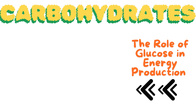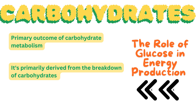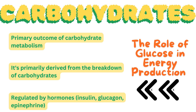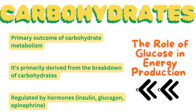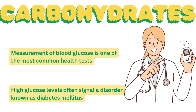Glucose is one of the most critical outcomes of carbohydrate metabolism, primarily derived from the breakdown of carbohydrates we consume or from our body's stores. Under diverse conditions, hormones like insulin, glucagon, and epinephrine regulate blood glucose levels, keeping them within a narrow, healthy range. High glucose levels often signal diabetes mellitus, a condition impacting over 415 million adults worldwide.